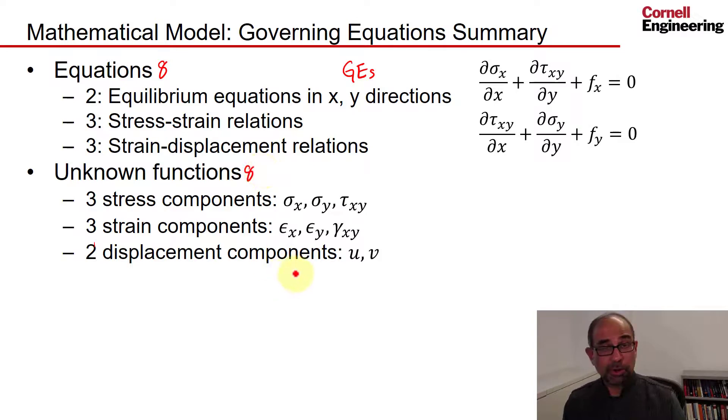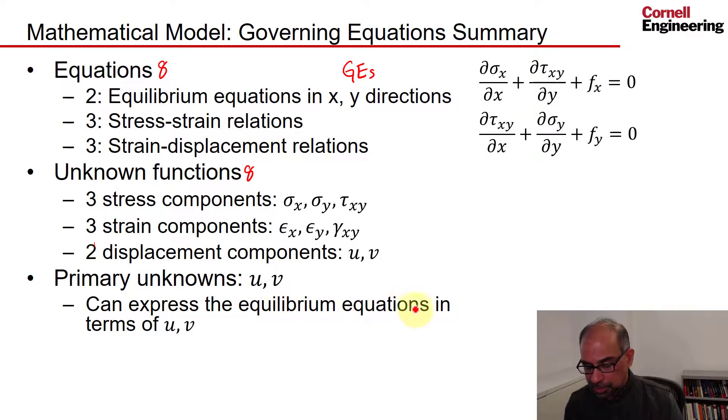General-purpose finite element codes such as ANSYS assume that the primary unknowns are the displacements, in this case u and v, which means we have to write the governing equations, or the equilibrium equations, in terms of u and v.